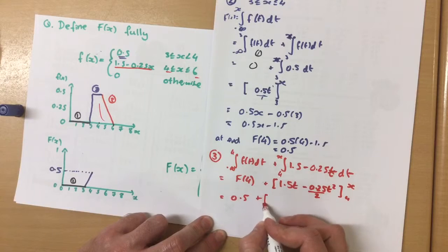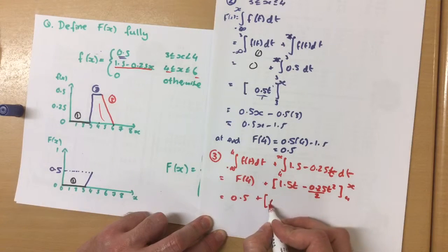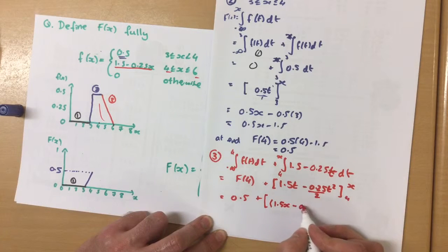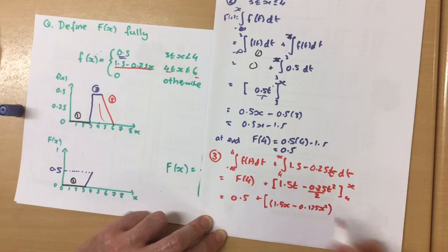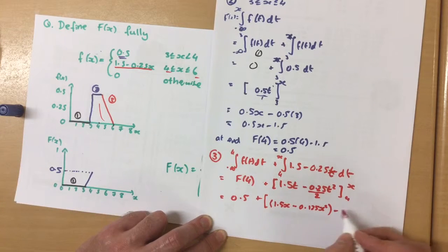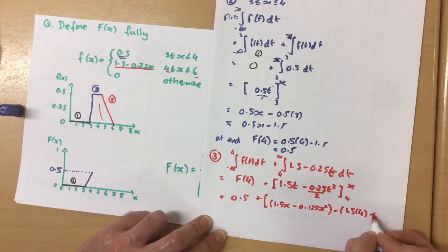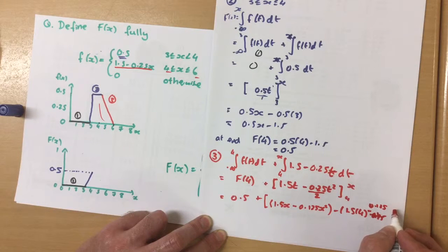And we integrate this. We'll first substitute in x, so 1.5x minus 0.125x squared, and take away from that our lower bound of 4. Wait, 0. Can't squeeze the writing in. Take away 0.125x times 4 squared.